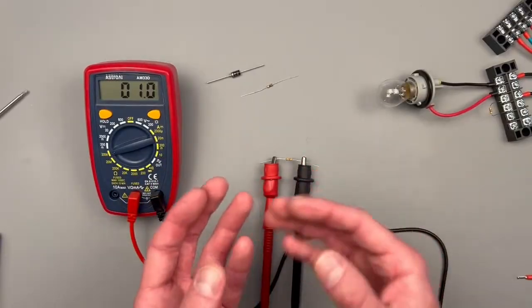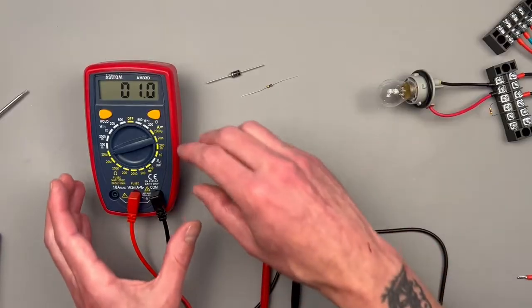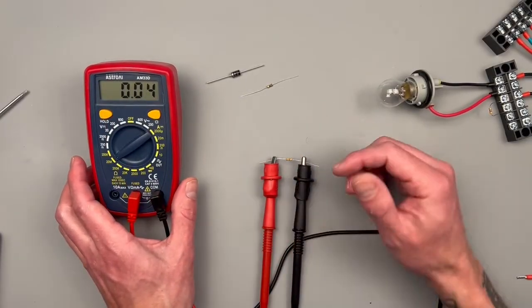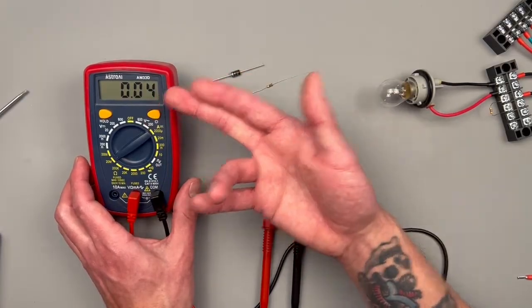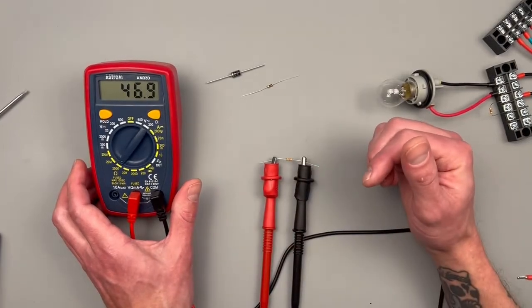Let's try 20 megaohm. We're still getting some kind of reading, but it's a four. So at least we're on the right track. Not until we get to this 200k, now we can see that we have a 47k ohm resistor.